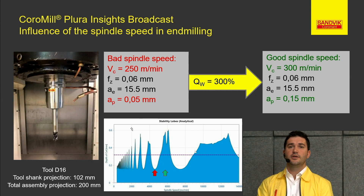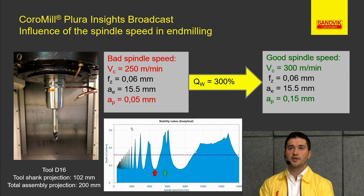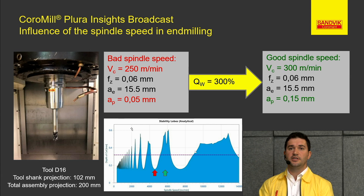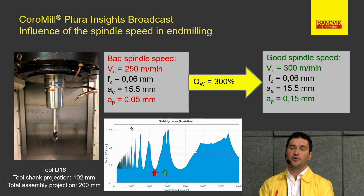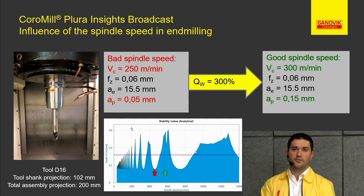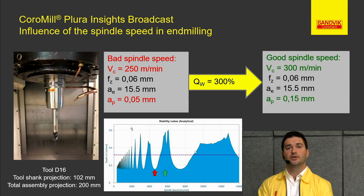As we could see, the bad RPM at 250 meters per minute compared to 300 meters per minute — we improved productivity three times by going up with the spindle speed. This is well within our range for the steel material. Of course, if we reduce the RPM slightly it will also work, but the window of operation would have been smaller. You can achieve much deeper depth of cut if you go with higher RPM.